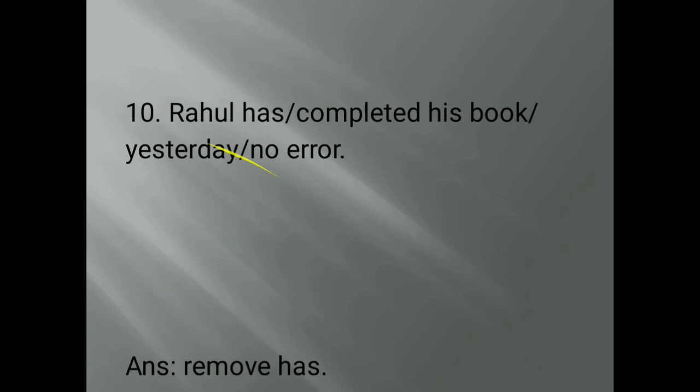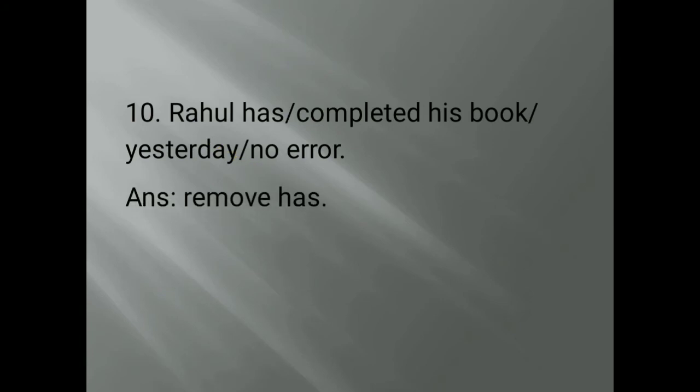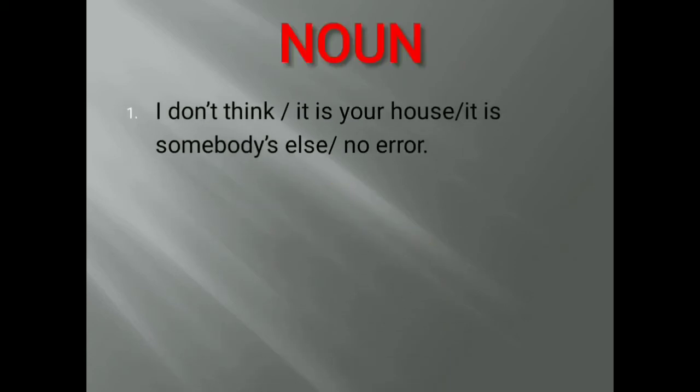Now let's look at noun-related questions. Question one: 'I don't think it is your house, it is somebody's else.' You cannot write 'somebody's' here. The correct answer is: 'I don't think it is your house, it is somebody else's.' — actually the correct form is simply 'somebody else.'